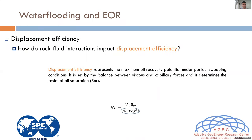For displacement efficiency, the influence of wettability is more obvious because we have it explicitly in the capillary number. The contact angle θ is one characteristic used to classify wettability, and interfacial tension also appears. Both parameters have a direct impact on the capillary number, on the curvature of the interface as seen in capillary pressure equations, and on how strong the viscous forces must be to overcome capillary forces.